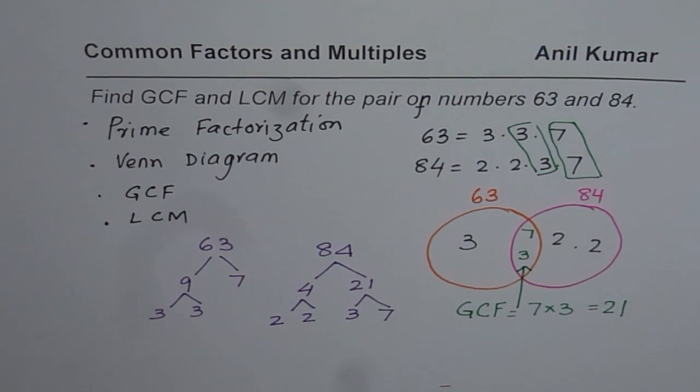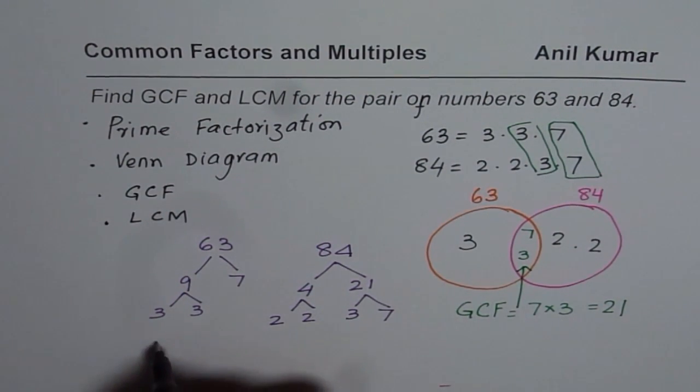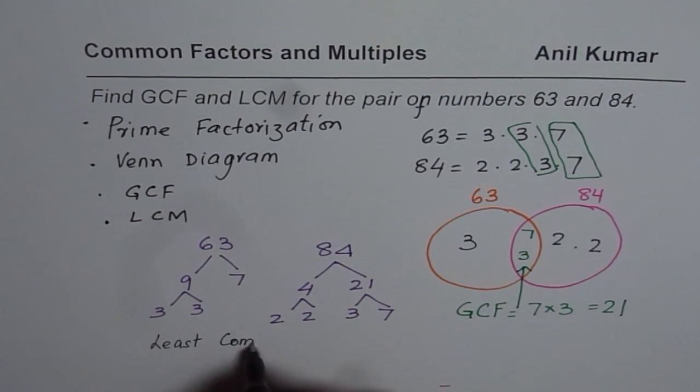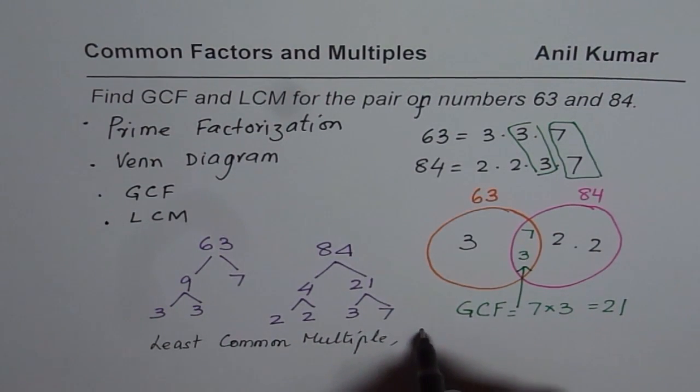To find the least common multiple, what do we do? To find the least common multiple, let me write the full form. Now that is LCM. For LCM, we multiply all these factors.